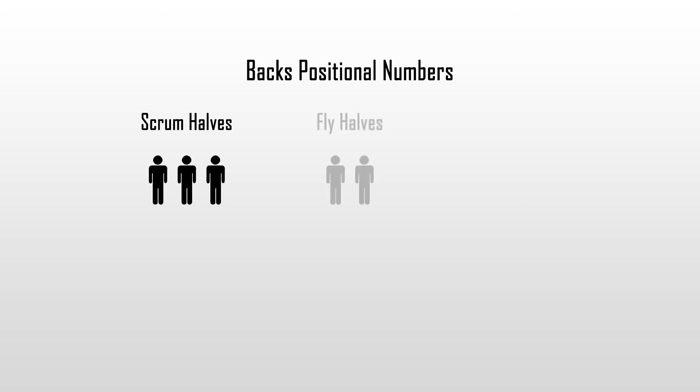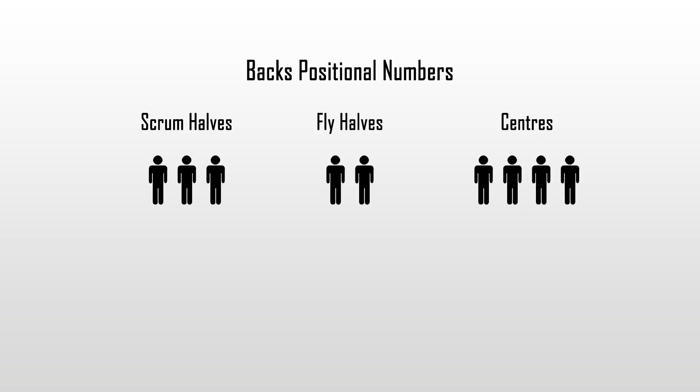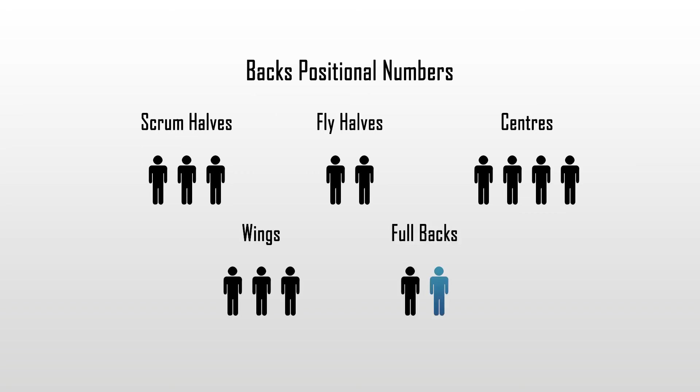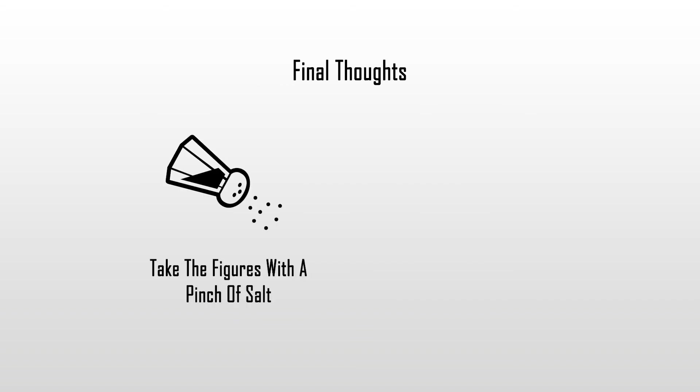As for the backs, the average is three scrum halves, two fly halves, four centres, three wingers, and depending on the split, one or two full backs. The back split has much more potential for variety due to positions being less specialised and more utility players — for instance, many wingers can cover full back and vice versa. The numbers in the positional breakdown should be taken with a pinch of salt, as they are averages with a lot of variety.